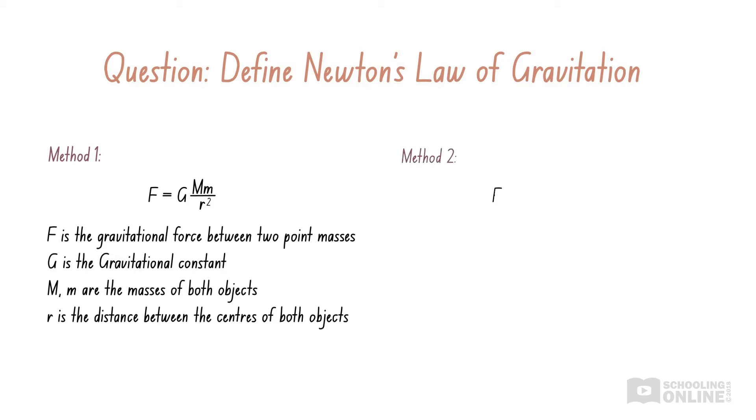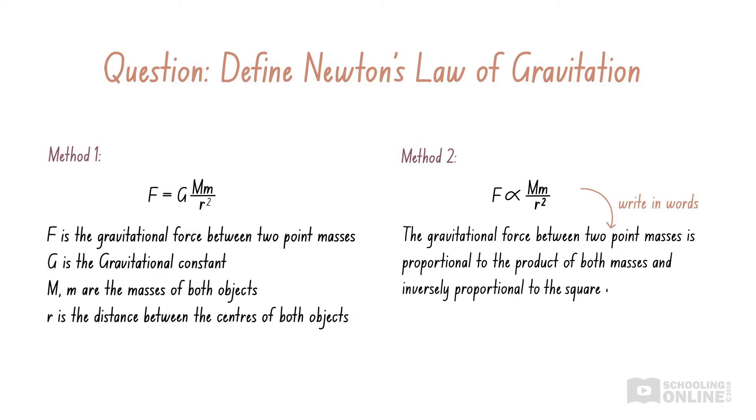Otherwise, you can rewrite the equation as a proportionality relation by removing the proportionality constant, G. Then rewrite it in words, using fancy physics terminology. The gravitational force between two point masses is proportional to the product of both masses, and inversely proportional to the square of the distance between the masses.